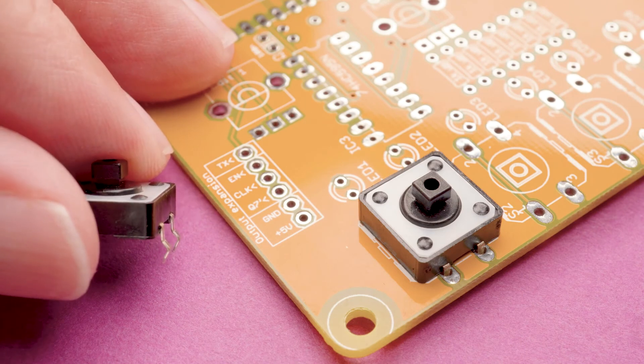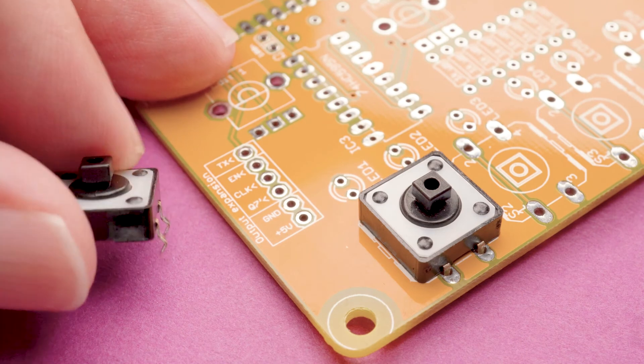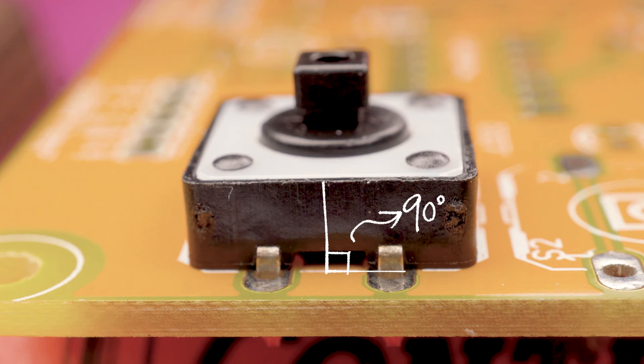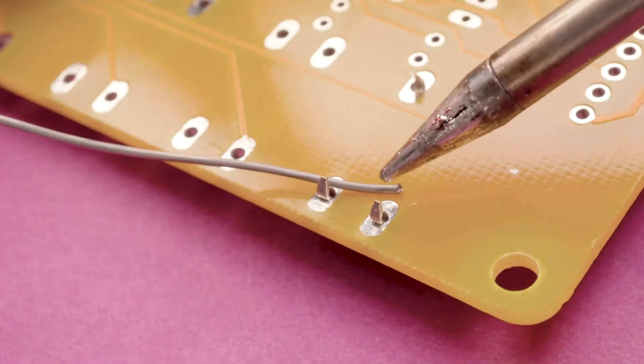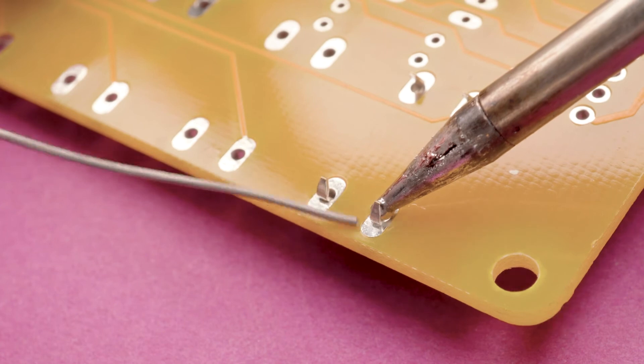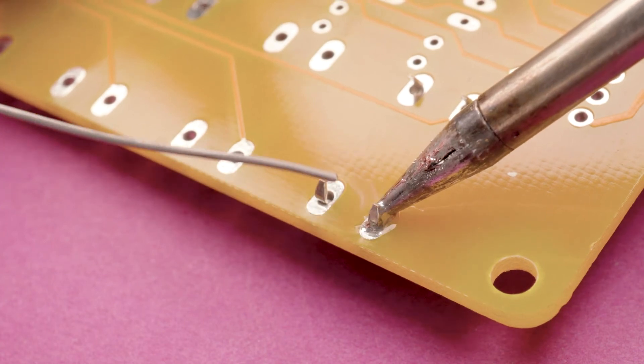So tack switches are something that you need to make sure that are completely flush with the printed circuit board. Now they snap in and it's just really important to just really check to make sure that it is just lying flat on that board. And then other than that, it's very simple. You just solder it in and it's ready to go.